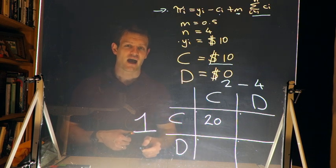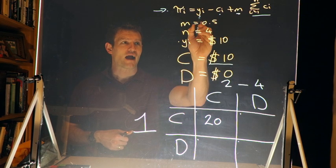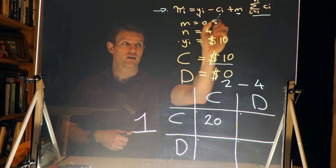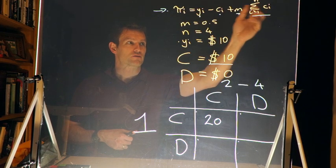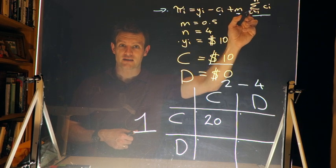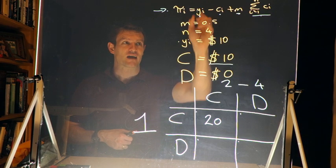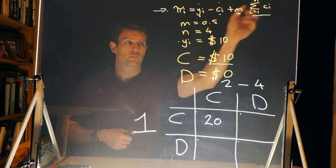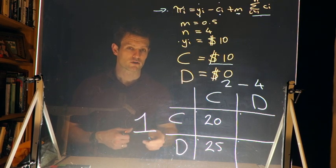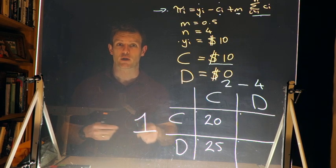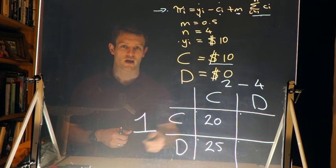Now, what if I do not contribute and everyone else contributes? My endowment y_i is ten dollars and my contribution c_i is zero. With everyone else contributing, there are thirty dollars in the public good. I get 0.5 times thirty, which is fifteen dollars. So my total payoff is ten minus zero plus fifteen, which equals twenty-five dollars — compared to twenty when I also contributed.